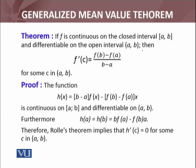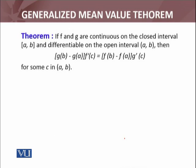Therefore, Rolle's theorem is applied, and h'(c) equals zero for some c in (a, b). Hence the theorem is proved. For the generalized mean value theorem, we have two functions f and g that are continuous on the closed interval [a, b] and differentiable on the open interval (a, b). Then we must have some c in (a, b) such that [g(b) - g(a)]f'(c) equals [f(b) - f(a)]g'(c).